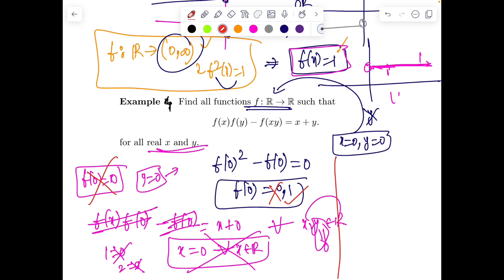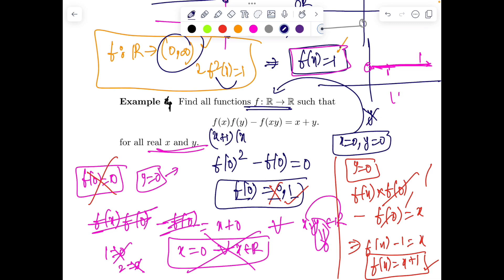Since f(0) = 0, we have f(x) = 0 for all x in ℝ, which is a bad statement. Case 2: f(0) = 1. Put y = 0, so f(x)·f(0) - f(0) = x, giving f(x)·1 - 1 = x, so f(x) = x + 1. Check: (x+1)(y+1) - (xy+1) = xy + x + y + 1 - xy - 1 = x + y. So f(x) = x + 1 is indeed the solution.